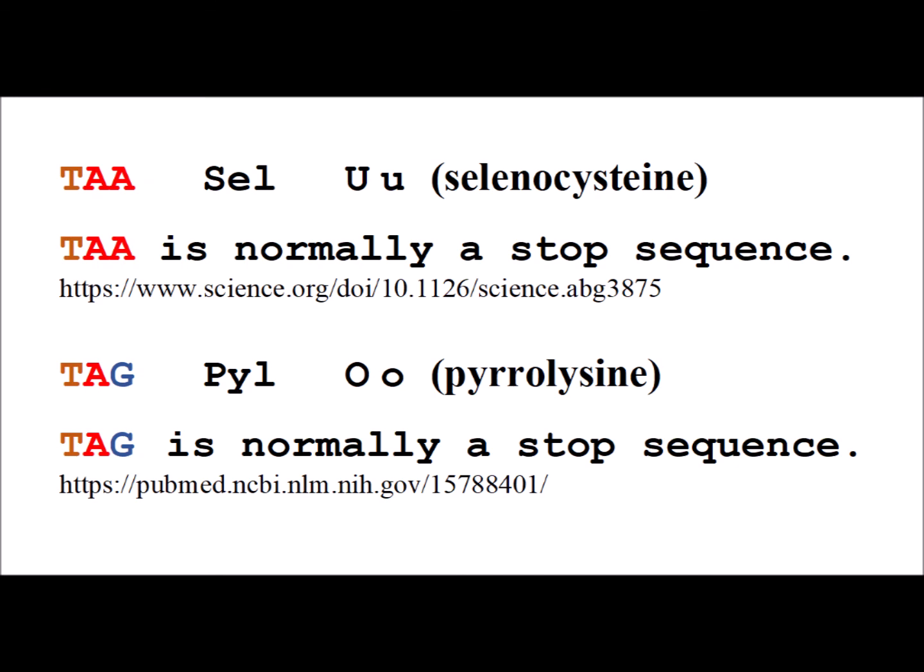Here we're using the codon TAA to code for selenocysteine, which has the one-letter code U. Normally, this codon is a stop sequence. We also have the codon TAG for pyrrolysine, which has the one-letter code of O, and TAG is also normally a stop sequence.